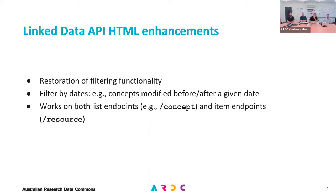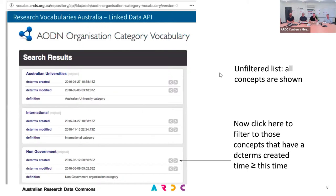Linked Data API. This is a case where the off-the-shelf functionality we had made available wasn't working so well, so we decided to hide the functionality until we could make it work well — and we've now made it work well. It's to do with some of the filtering capabilities. The HTML pages that you get through Sysbox, the Linked Data API, are quite good already — they let you do all sorts of filtering. But there was a certain filtering that wasn't working, and it is now.